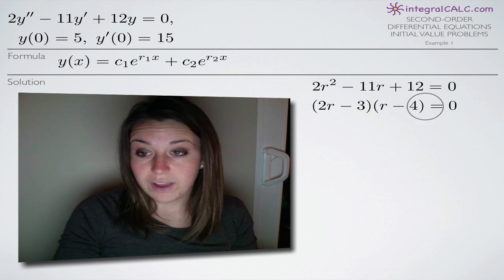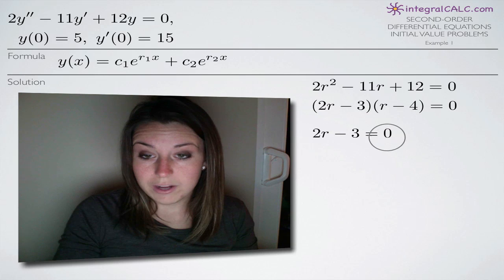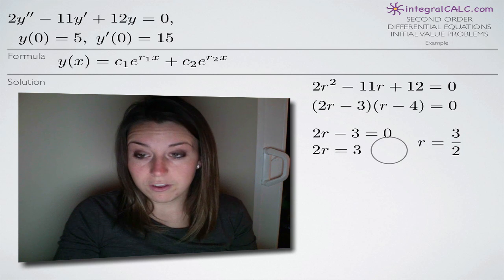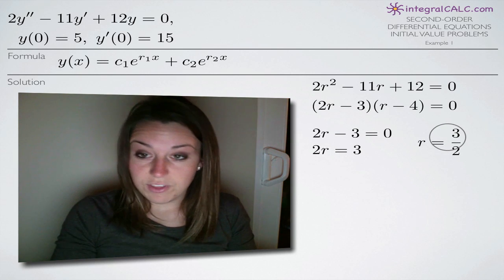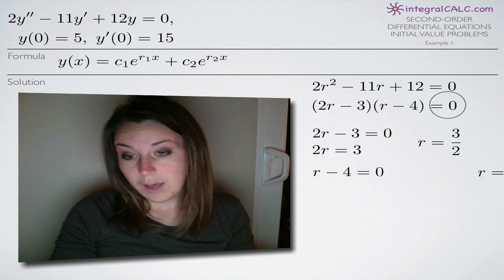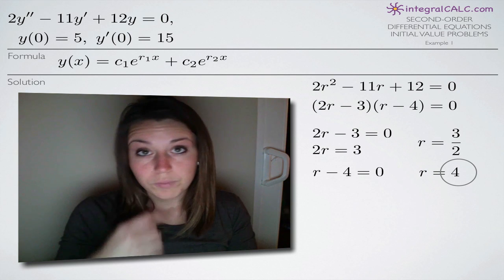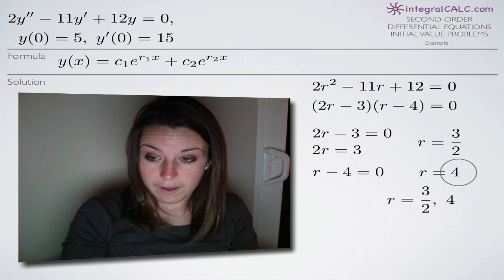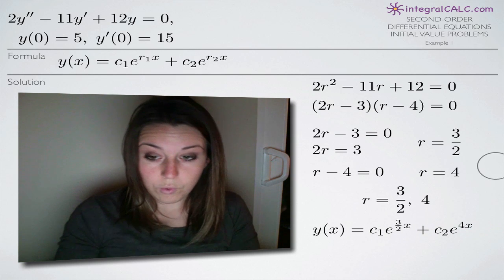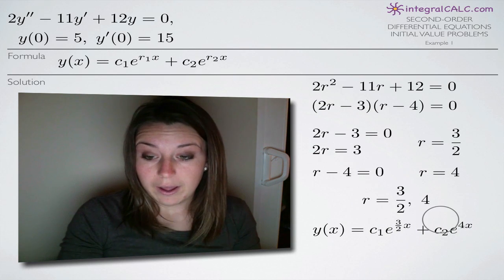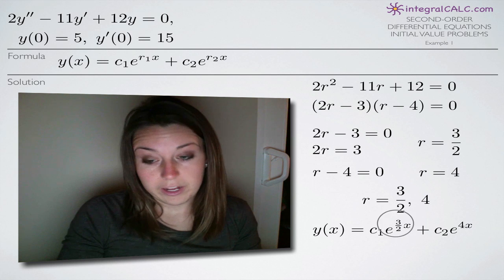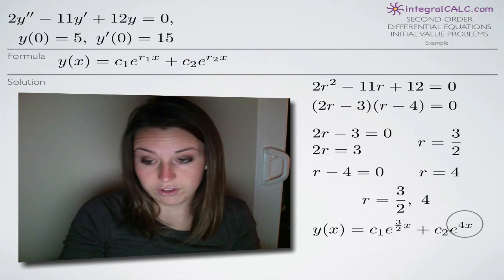We set each factor equal to zero. Starting with 2r minus 3 equals zero: add 3 to both sides to get 2r equals 3, then divide by 2 to get r equals 3/2. Then for r minus 4 equals zero: add 4 to both sides and we get r equals 4. So our two solutions are r sub 1 equals 3/2 and r sub 2 equals 4, which we plug into the formula.